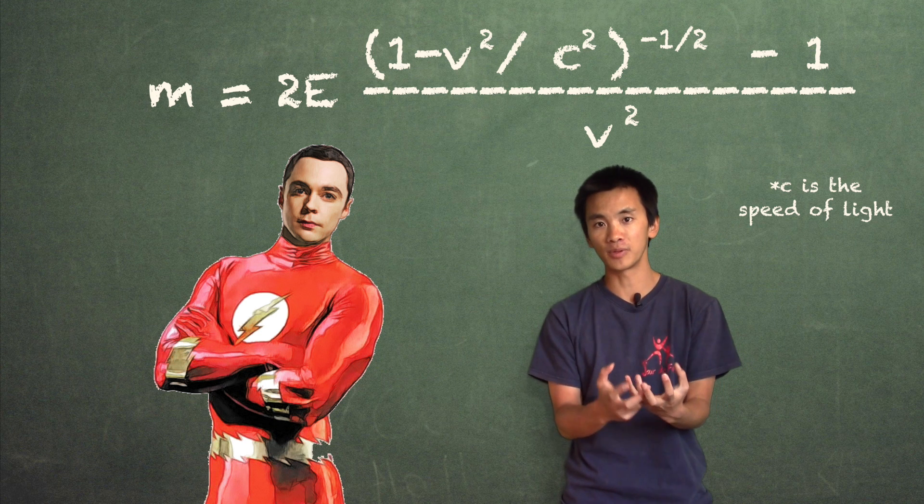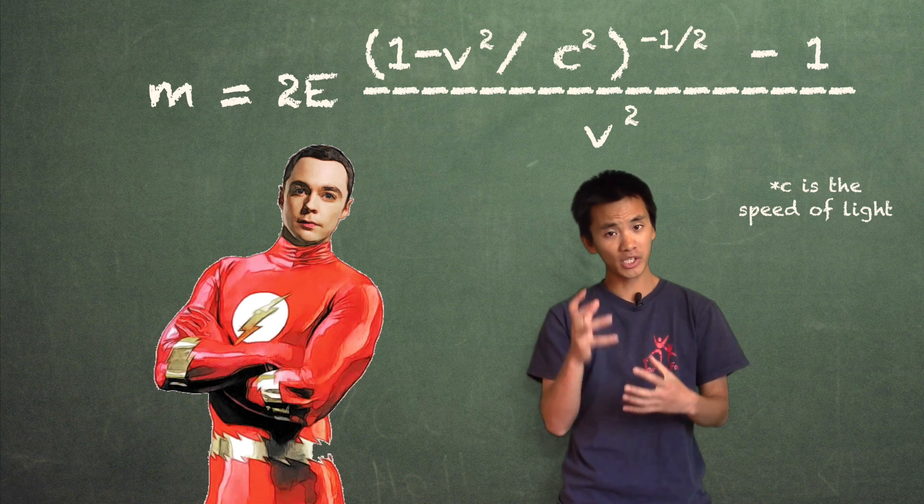And to give an answer to this question, what we're going to do is to take the limit of this expression when v goes to 0. That is, when Leonard's frame of reference is essentially the same as Sheldon's. And when we do so, we obtain this amazing equation.